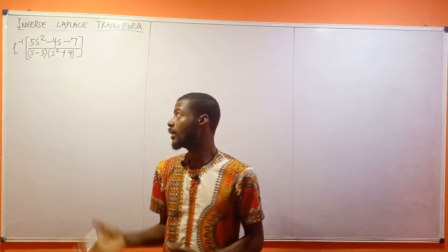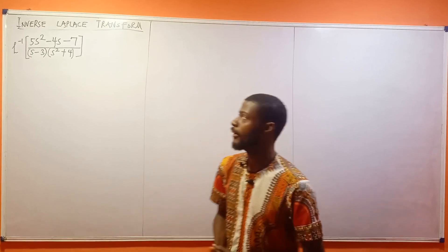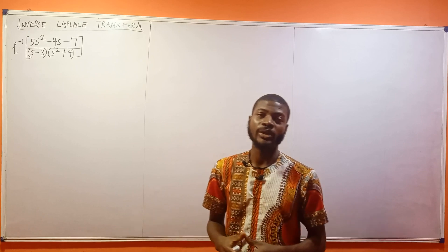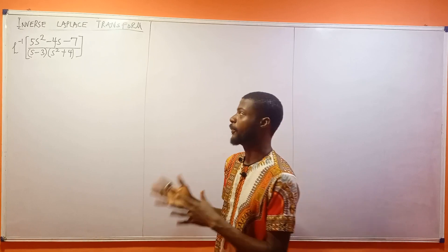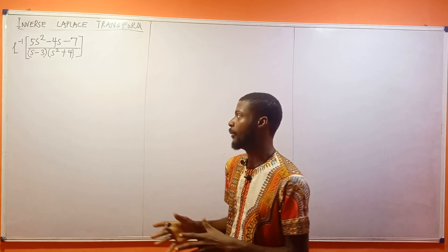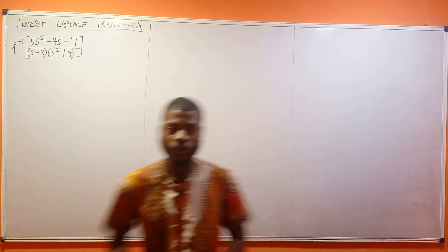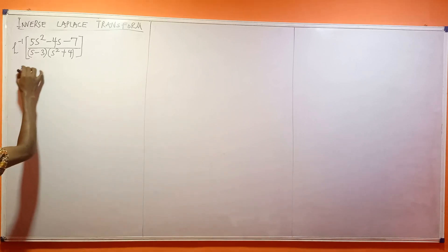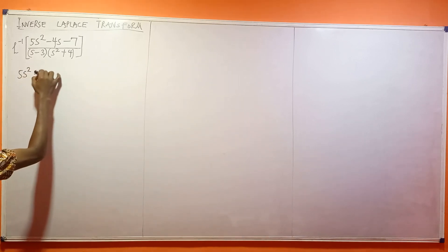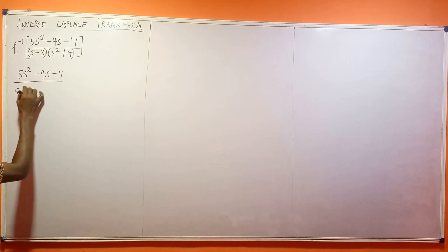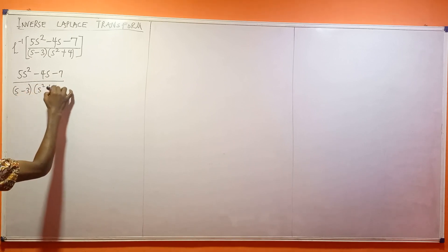In this video I'll be teaching how to solve that very question. The first thing I'm going to do is to actually decompose this into its partial fraction components. So we have 5s² minus 4s minus 7 divided by (s minus 3)(s² plus 4).